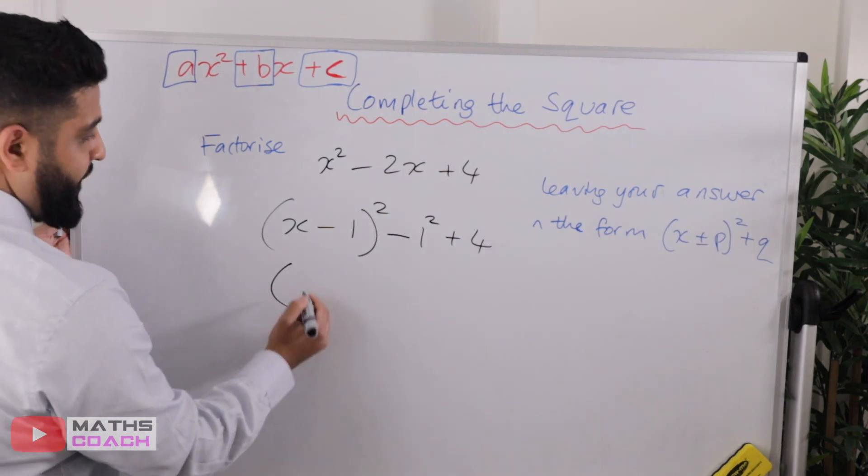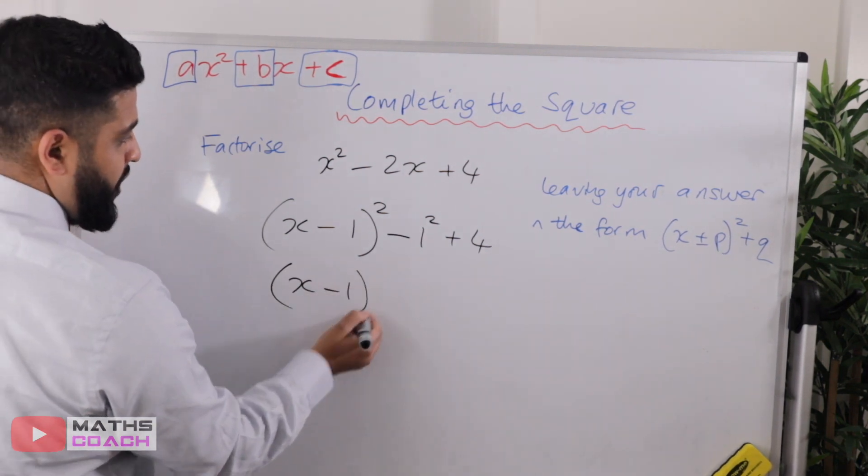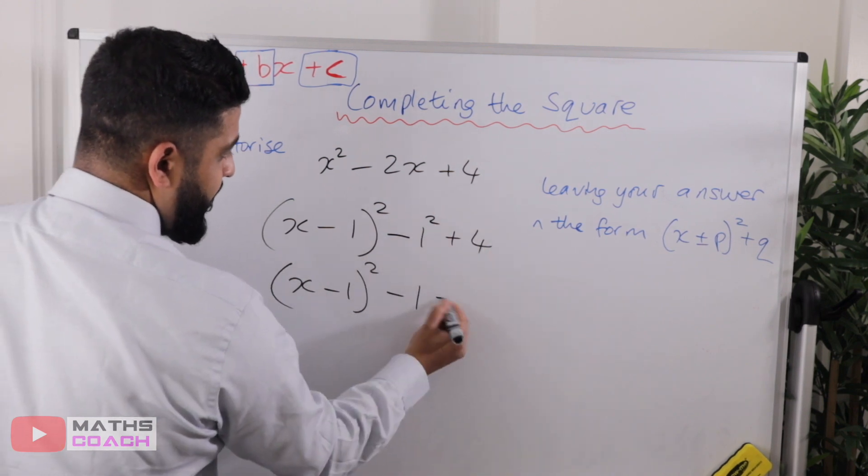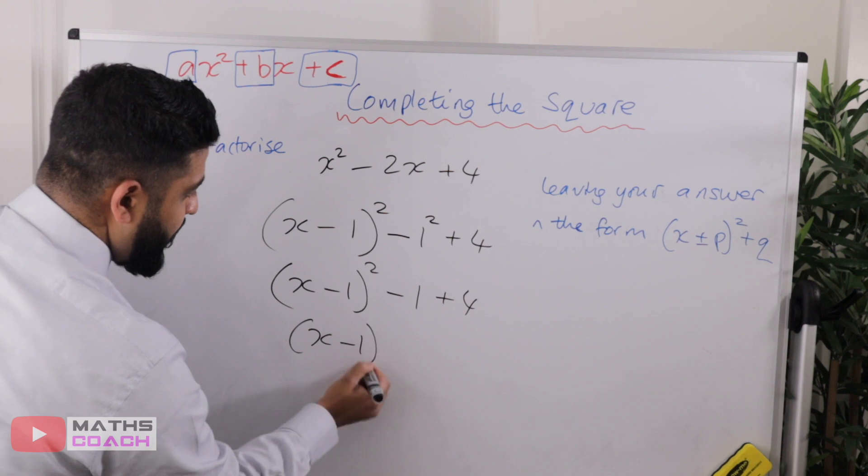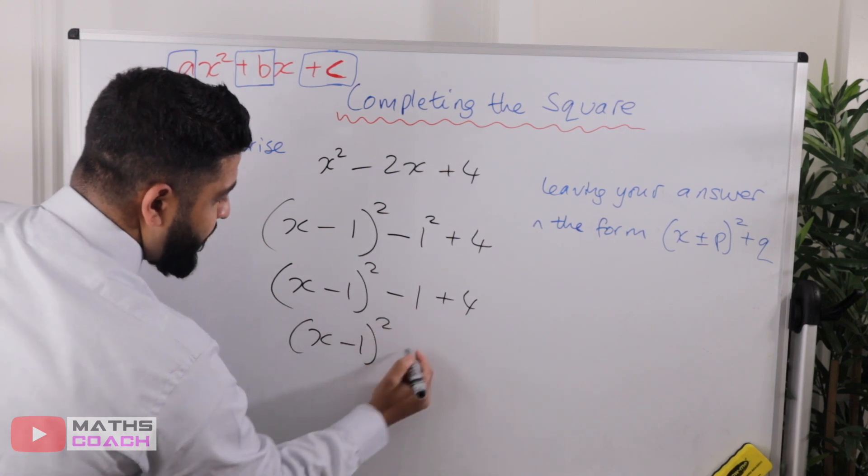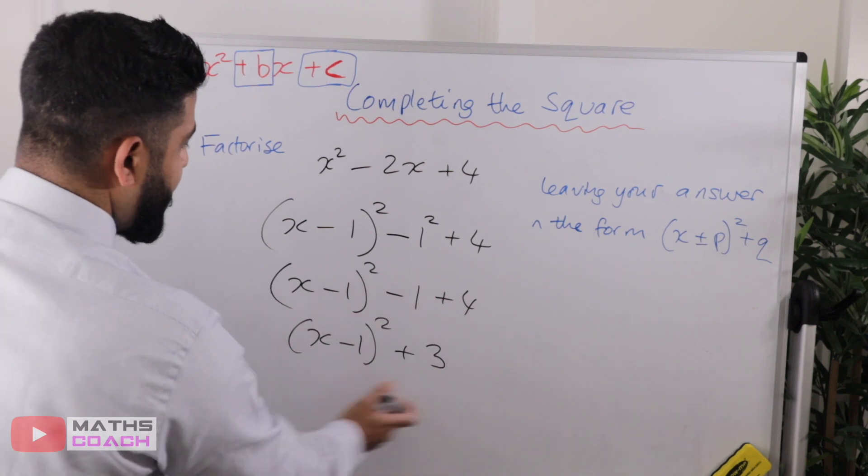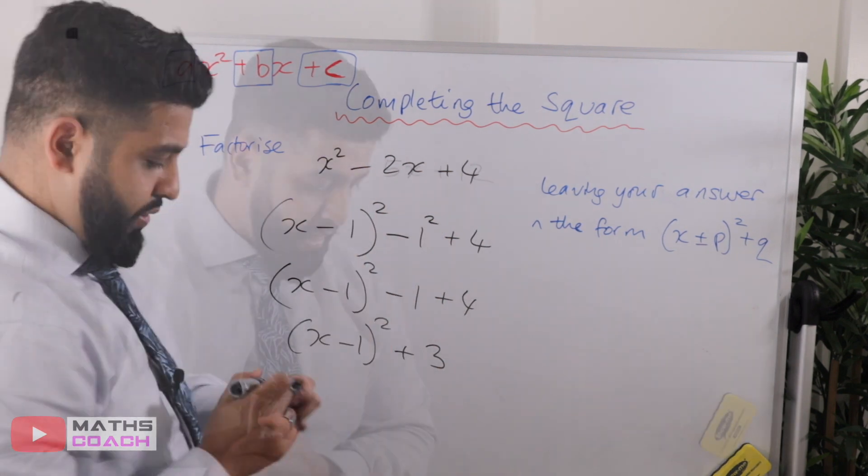Next, tidy up. So (x - 1)². That is minus one. One squared is minus one. So plus four. And then we've got (x - 1)². And minus one plus four is plus three. So that is the factorized form of that one.